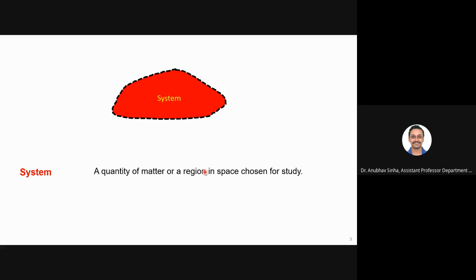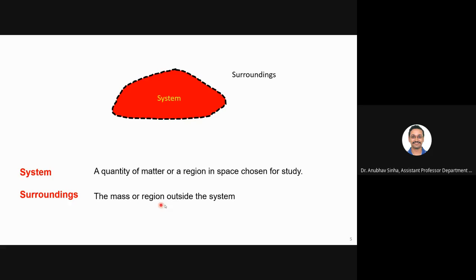A system could be said to be a quantity of matter or a region of space — whatever you choose for your study. You can select any arbitrary volume or any type of boundary, but you need to be clear what boundary you have defined. Whatever is inside that boundary will be your system, and what is outside will be the surrounding. Surrounding is the mass or region outside your system.